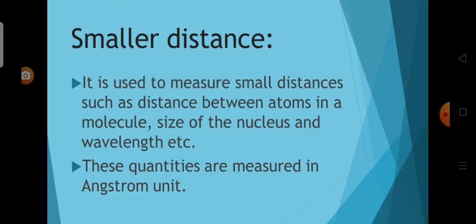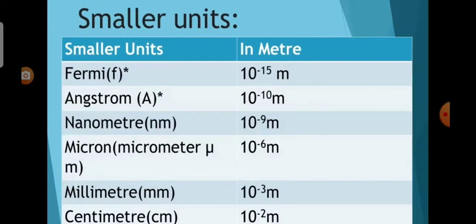Smaller units are used to measure small distances such as distance between atoms in a molecule, size of the nucleus, and wavelength. These quantities are measured in smaller units. Fermi, angstrom, nanometre, micron, millimetre, and centimetre are some of the smaller units.